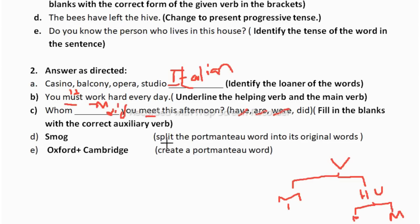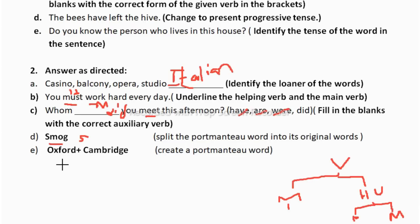Next: 'SMUG — split the portmanteau word into its original words.' Portmanteau words are formed by merging two words. SMUG comes from smog + fog. So you write: smog + fog = smug. Then: 'Oxford + Cambridge — create the portmanteau word.' Merge the two words to get 'Oxbridge.' In this way you need to answer portmanteau questions.